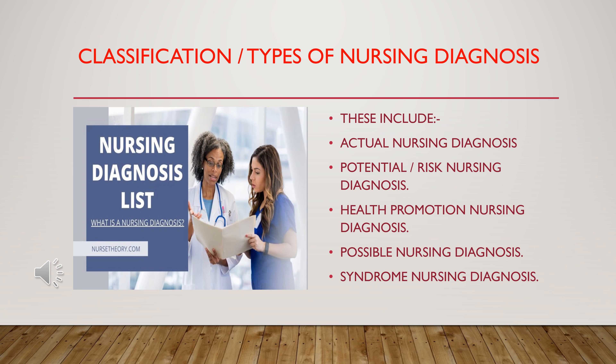Now let us see the types of nursing diagnosis. There are basically five types used in patient care settings: actual nursing diagnosis, potential or risk nursing diagnosis, health promotion nursing diagnosis, possible nursing diagnosis, and syndrome nursing diagnosis.